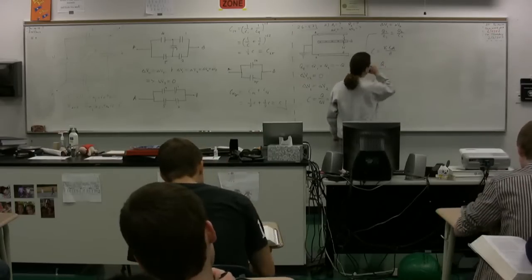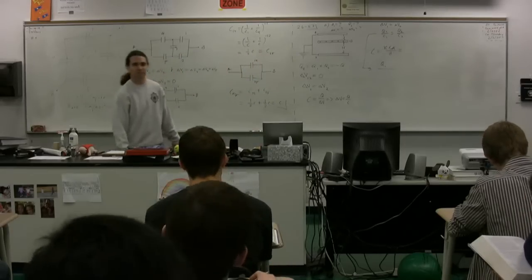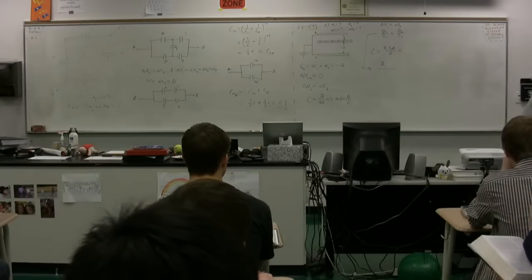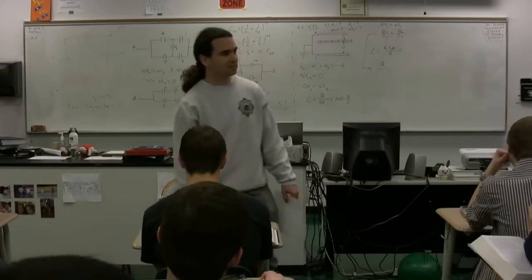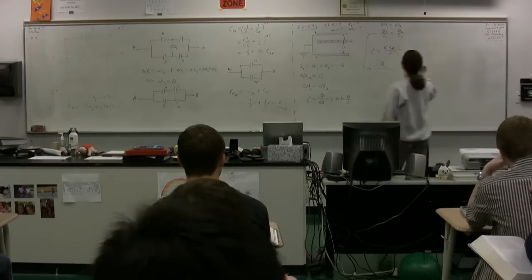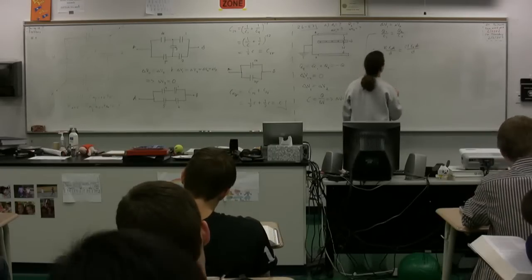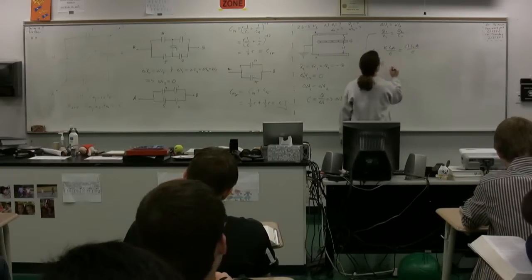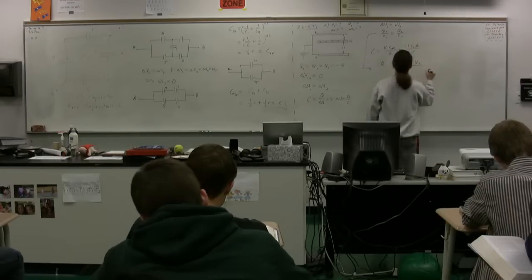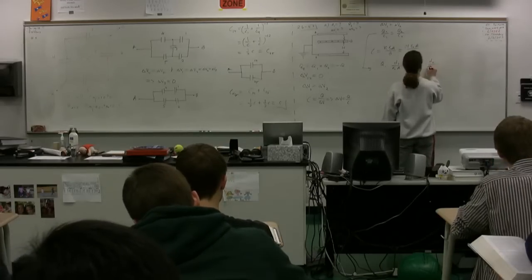We can substitute that into our equation. We have Q1 times D1 divided by ε₀ times A equals Q2 times D2 divided by ε₀ times A. We know something about D1 versus D2 — we actually have equations for them: D1 is just D, and D2 is just 2D.